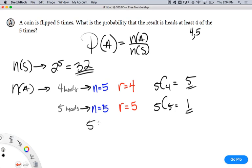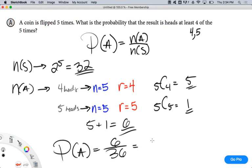What about when I'm interested in five heads? This is very important. R is five. So, this is 5C4, and this is 5C5. This is five, and this is one. What do I do with those two? Five plus one equals six. Now, that's the total NA. I get six over 32, which is 0.1875. Does that make sense to you guys?